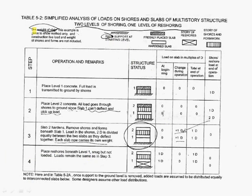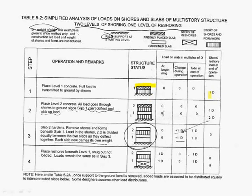Live load is taken into account. So let's take a look at the first floor. We're putting on fresh concrete because the fresh concrete slab is not allowed to deflect. So all the load is transmitted through the shoring to the ground, and the load on the shoring is just 1D.